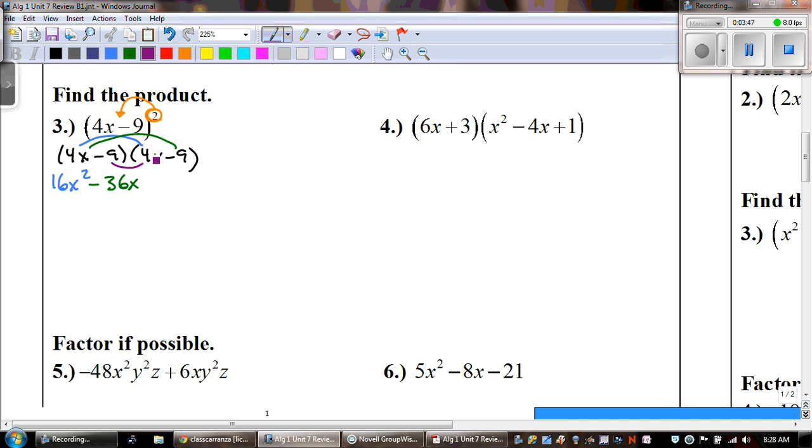4x times negative 9 is negative 36x. Once again, negative 9 times 4x is negative 36x. And then negative 9 times negative 9 is a positive 81. And then that next step would be to combine our like terms in the middle, which leaves us 16x squared. Negative 36 and negative 36 is a negative 72x plus 81.